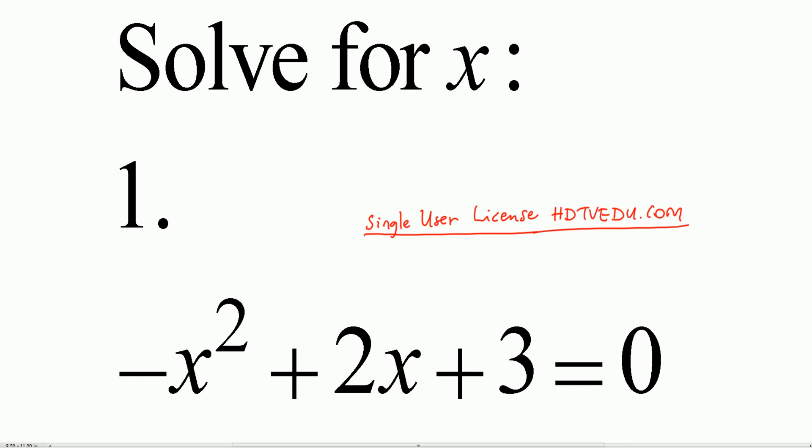Solve for x. Negative x squared plus 2x plus 3 is equal to 0.